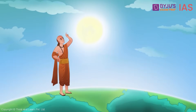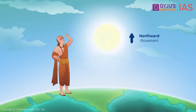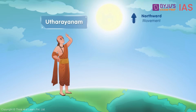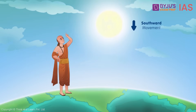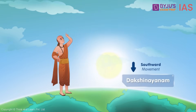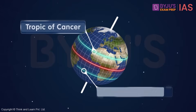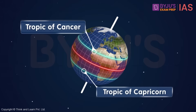Indians also observed this northward and southward movement of the sun and gave them special names. The apparent northward movement of the sun from the Tropic of Capricorn to the Tropic of Cancer is called Uttarayana. And the apparent southward movement of the sun from the Tropic of Cancer to the Tropic of Capricorn is called Dakshinayana. The Tropic of Cancer and Tropic of Capricorn are the latitudes that mark the extreme northern and southernmost points respectively, until which the sun's rays hit the earth directly.